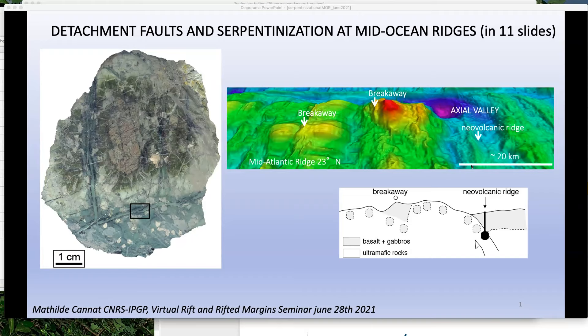On one flank of the ridge you see these domal structures, beautifully corrugated, and this is how we interpret them — with detachment faults that exhume these domes. The geology there is a mixture of partly serpentinized ultramafic rocks and intrusions of gabbros and basalts.